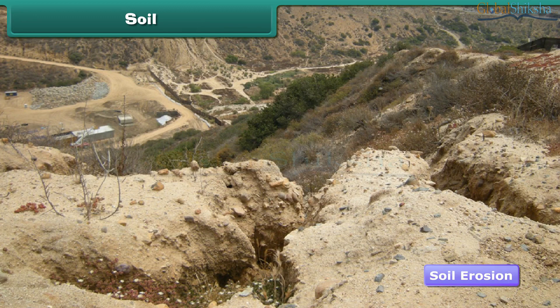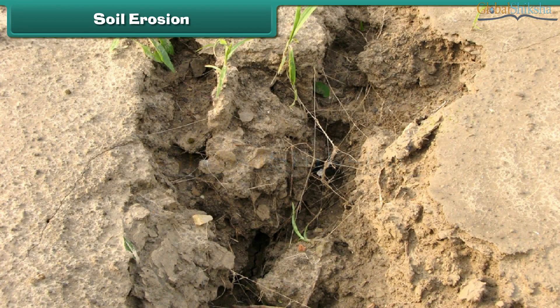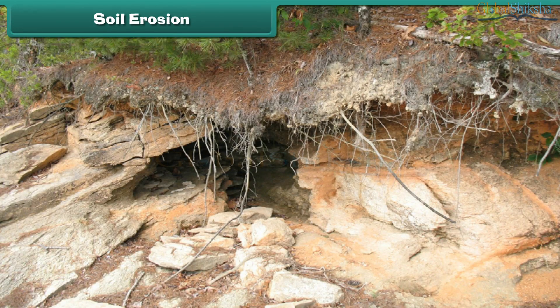The fertility of soil has decreased significantly, mainly because of soil erosion. The natural removal of soil by the action of water or wind is called soil erosion. Look at the images — the disappearance of the topmost surface and large ditches in the ground are the signs of soil erosion.